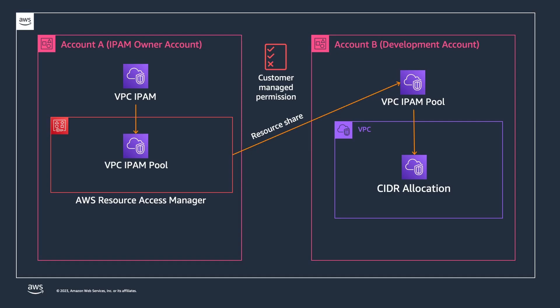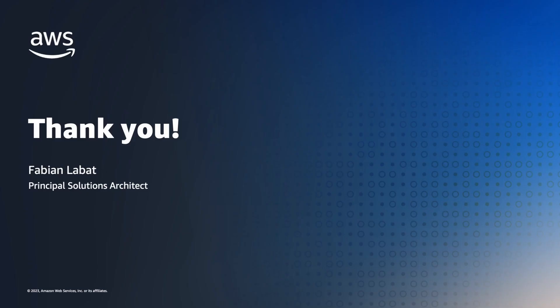With customer managed permissions, you can now use AWS Resource Access Manager to author fine-grained resource access control for supported resource types, following the best practices of least privilege by granting only the permissions required to perform a task.